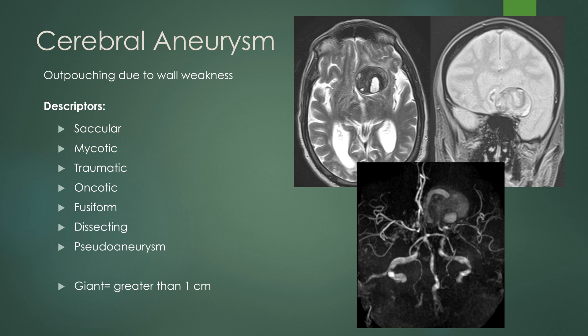A cerebral aneurysm is defined as an outpouching due to wall weakness. The descriptors we use in radiology are: saccular (a round outpouching), mycotic (associated with an infection), traumatic (post-trauma), oncotic (related to a cancer), fusiform (involving a longer segment), dissecting (associated with a dissection), and pseudoaneurysm, which involves less than three layers of the wall — usually the intima and the media.